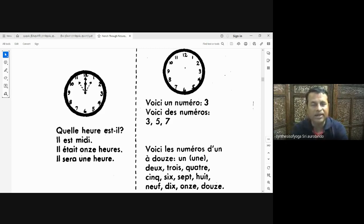Here is number three. Here is N3. Voici le numéro. Here are some numbers. Voici des numéros.